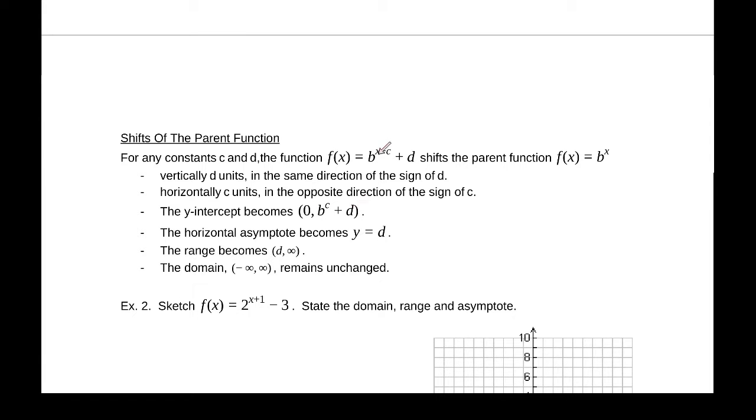The y-intercept becomes b^c + d. If you notice, if you plug zero in for x, that's just what we get. So we'll plug zero in to find the y-intercept. The horizontal asymptote becomes y = d based on that shift. The range then becomes d to infinity, and the domain remains unchanged.